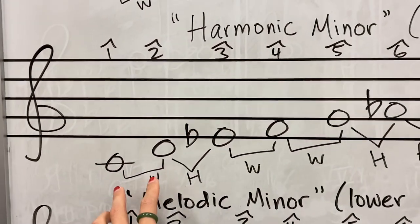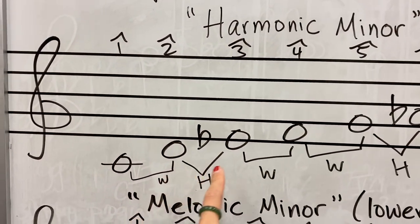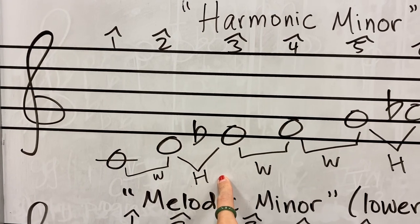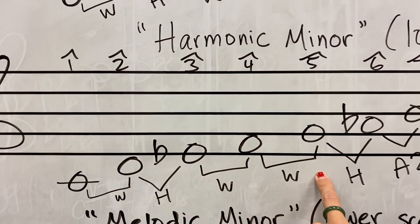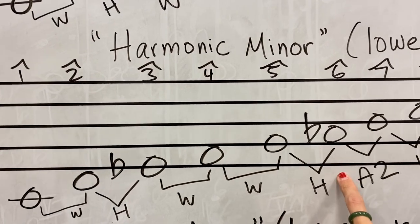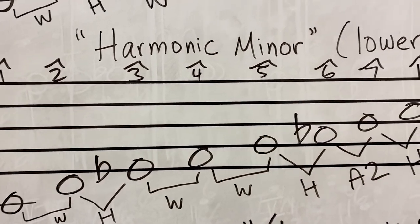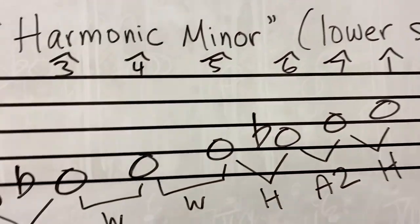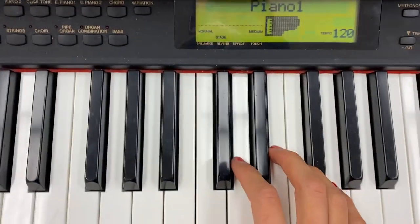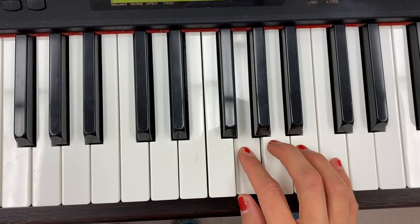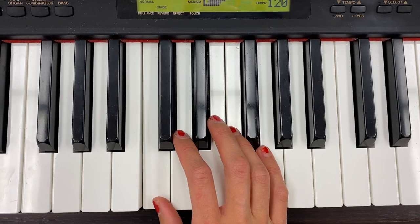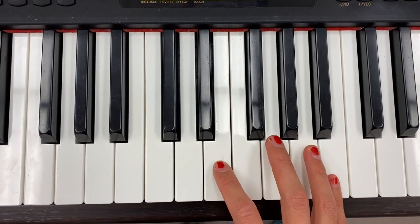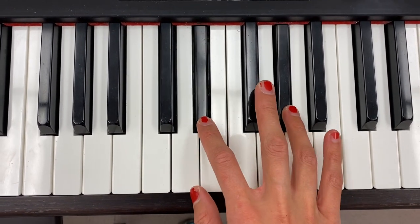So you have your whole step from C to D, D to E-flat is your half step, E-flat to F is a whole step, F to G is your whole step, G to A-flat is a half step, A-flat to B is your augmented second, and B to C is your half step. Here's my C major scale, and then here is C harmonic minor — we lower the 3rd and the 6th degree.